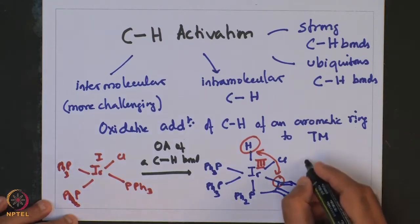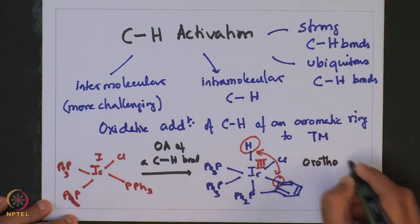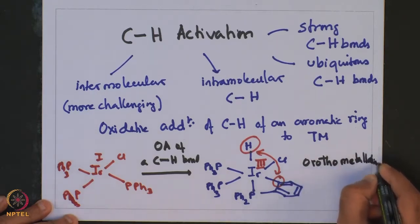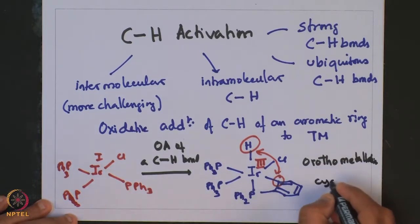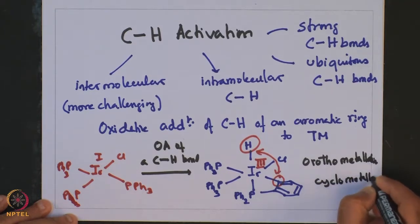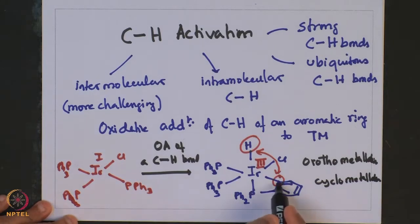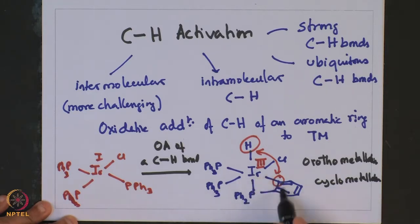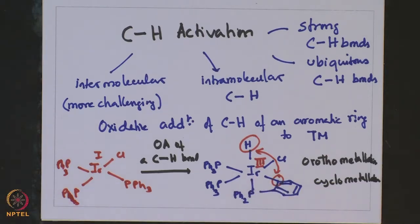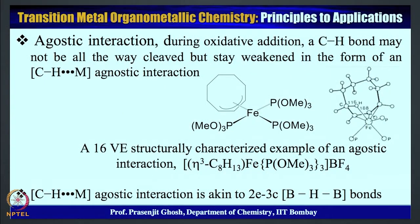This type of reaction is called orthometalation or cyclometalation. Orthometalation because the CH bond ortho to the aryl ring gets activated and makes a metal-carbon bond. Cyclometalation because there is a cyclic ring structure formed that contains a metal-carbon bond as part of the cyclic ring. One has then to look at various methods or the mechanism in which this CH activation reaction proceeds, whether in case of intermolecular or intramolecular reactions.